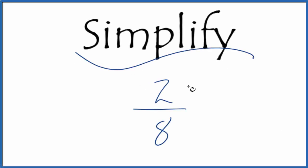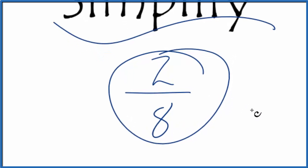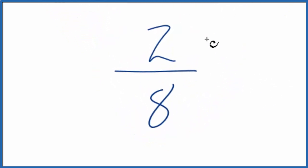If you're asked to simplify the fraction 2/8, here's how you do it. We're trying to take 2 over 8 and reduce it to its simplest form.